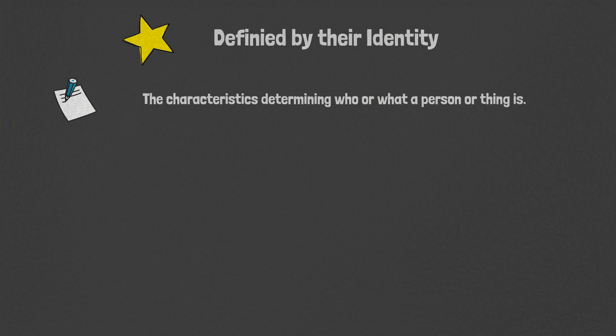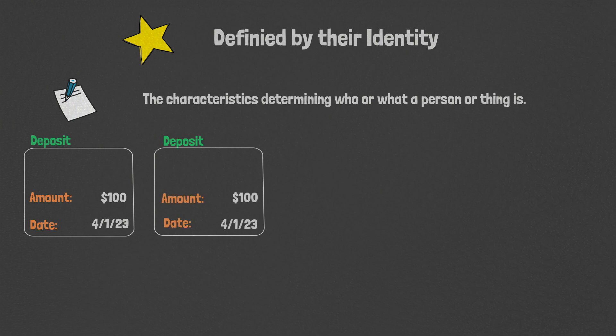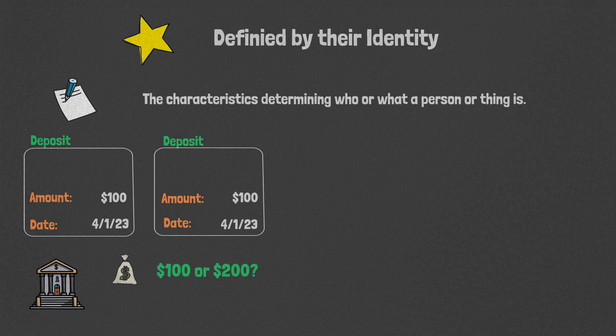Defined by their identity. Identity can be defined as the characteristics determining who or what a person or thing is. Let's consider two simple examples which illustrate the importance of this principle. Say we have two bank deposits for the same amount at the same time of day. Are these deposits the same? Does our fictional bank now have a hundred dollars or two hundred dollars? Do we need to reject one of these transactions? Is one of them a duplicate?